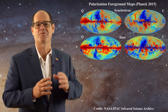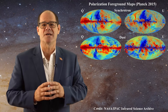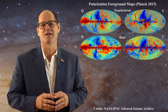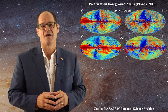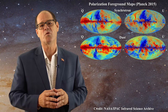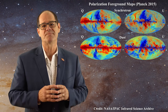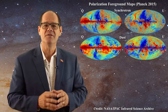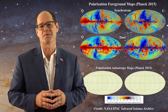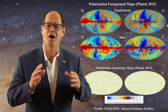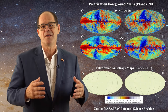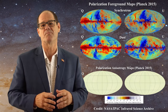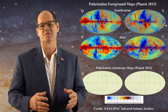Remember, these four maps represent the polarized foreground signals extracted by the Planck satellite from channel data. The idea that these four polarized microwave foreground maps can be used to extract these two polarization and isotropy maps is not reasonable. The point being, once again, that it is impossible to extract a weak signal from powerful overlying signals.